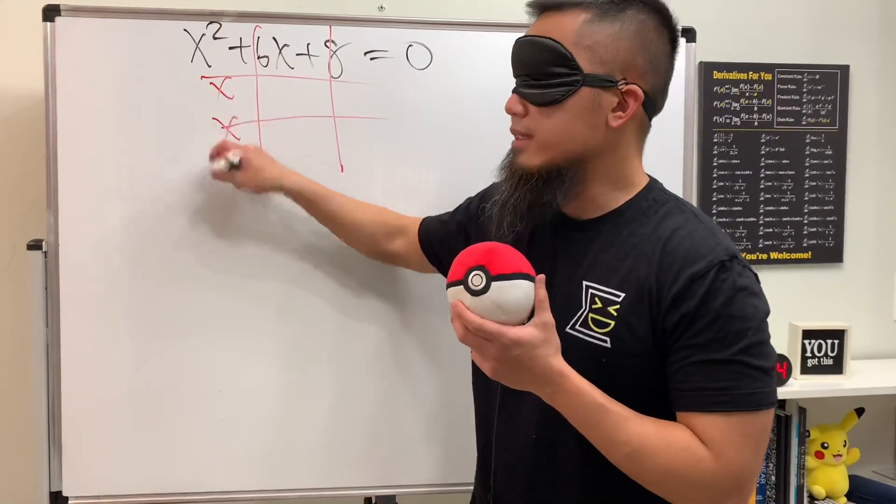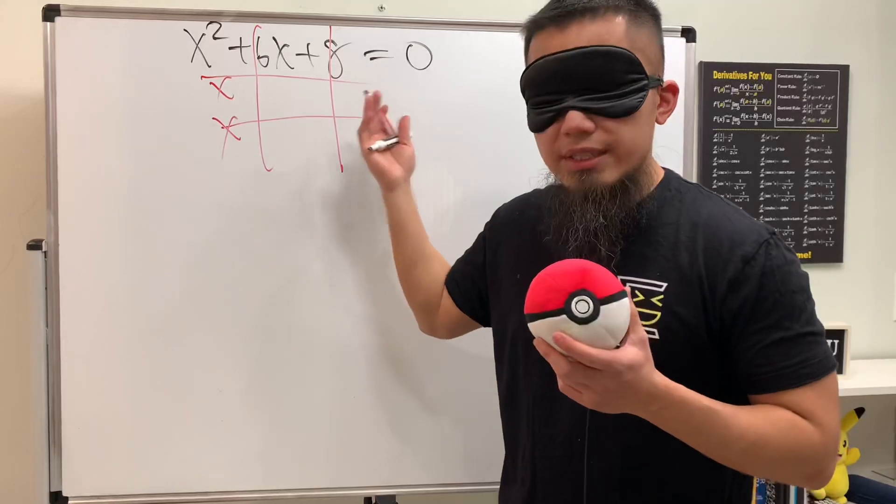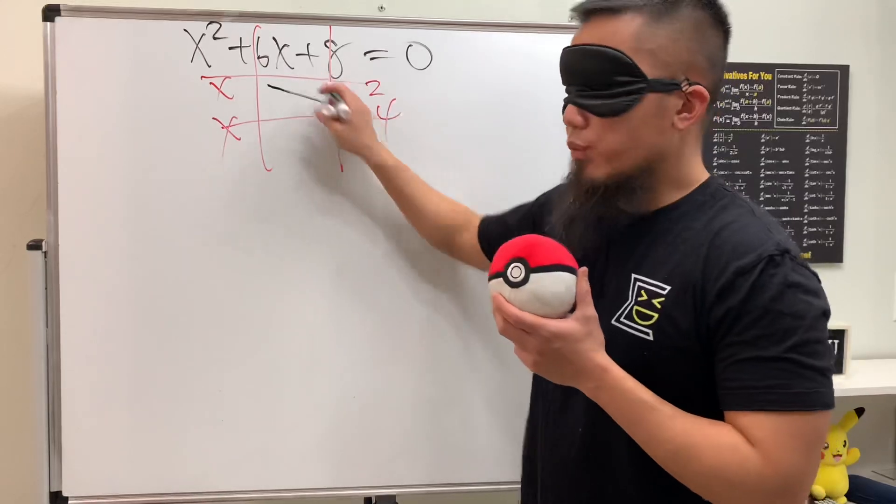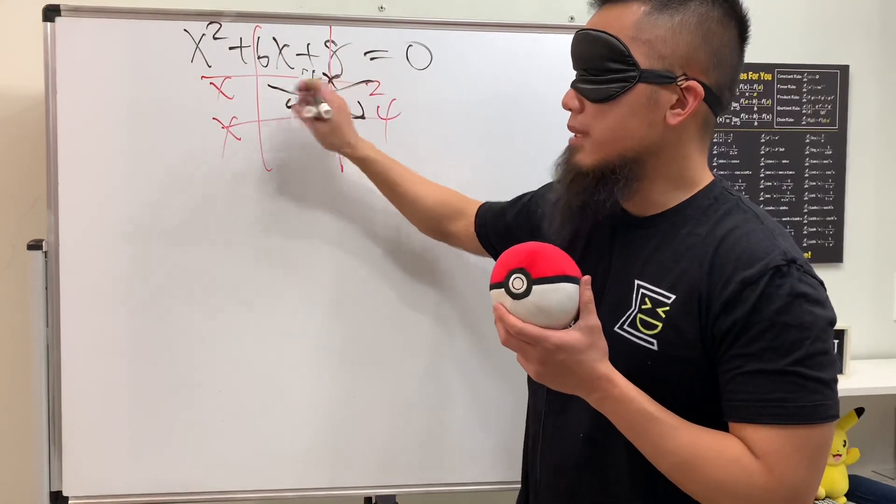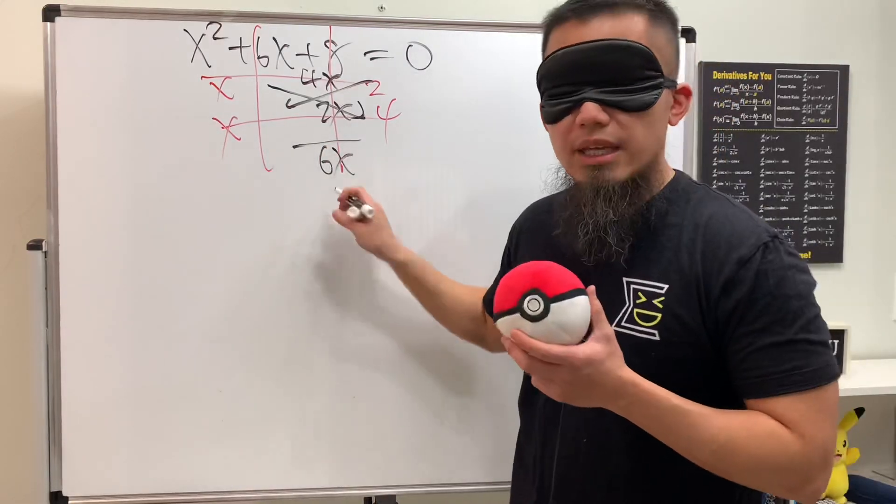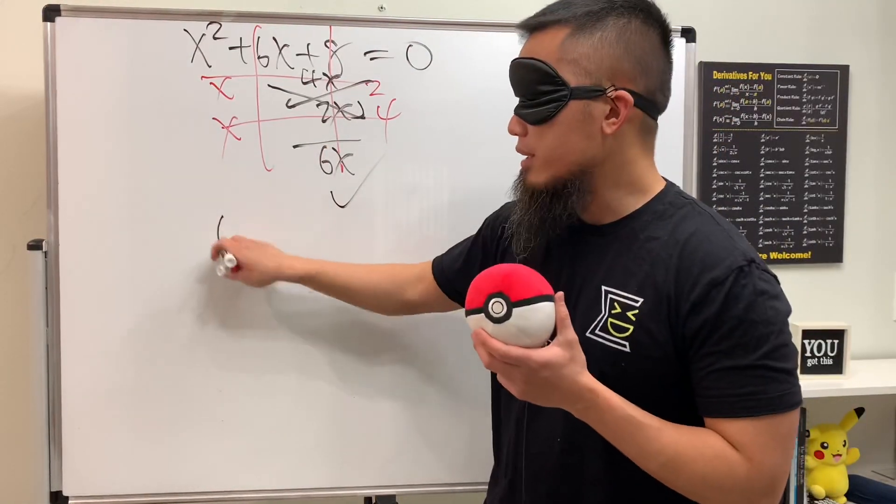And then to get the 8, let's use 2 and 4 because you can see that x times 4 gives us 4x and 2 times x gives us 2x. So together we end up with 6x, so this checks out. That means our factoring is (x + 2)(x + 4).